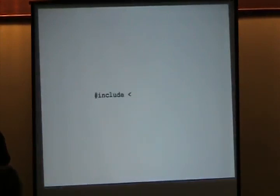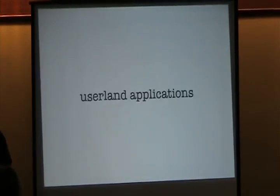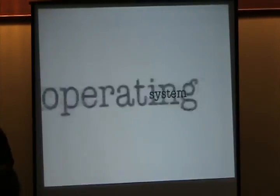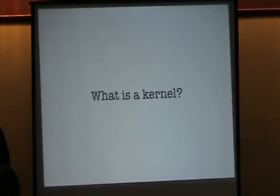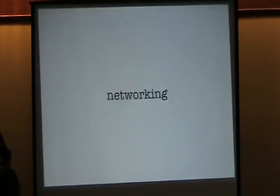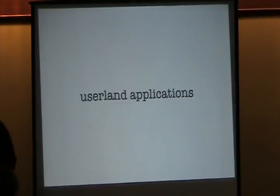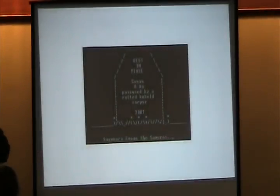But how does a computer let us do these things? It starts by taking text known as source code, and using a compiler we can translate it into binary machine language. That's the foundation for the kernel, libraries, and userland applications, otherwise known as an operating system, like BSD. So you ask, what is a kernel? It's a wonderful thing that allows us management of processes, memory, and peripheral devices. And by extension, allows us to do cool stuff like networking, provide better security, work with disks and file systems, create user interfaces, and interact with userland applications that let us write documents, read email, surf the web, watch movies, listen to music, play games, and much, much more.